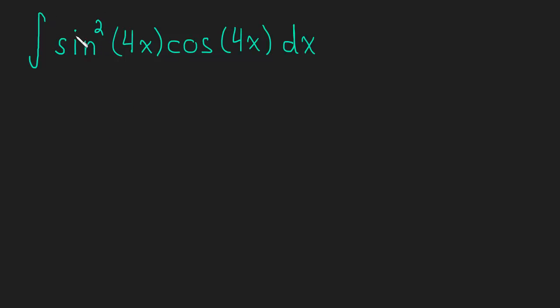So here we have sine squared, and we have 4x, and cos of 4x. Well, the derivative of just simply sine is cosine. And what I'm going to do to make this a little bit easier to see is I'm going to rewrite this first.